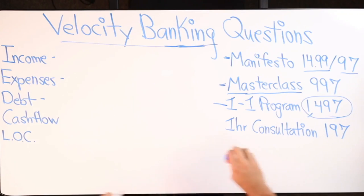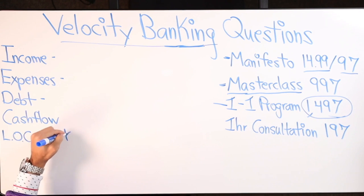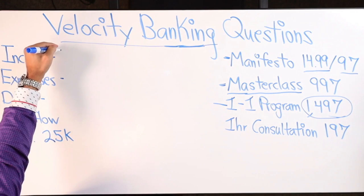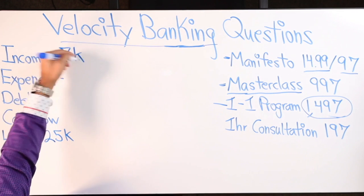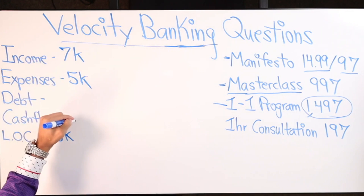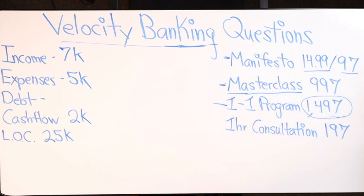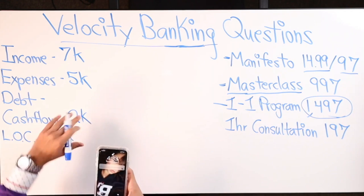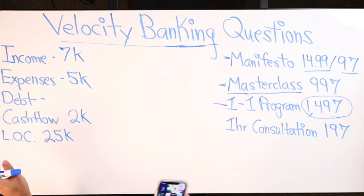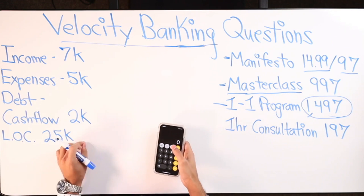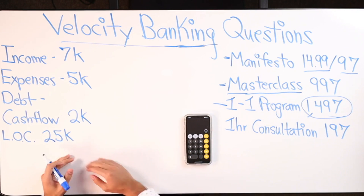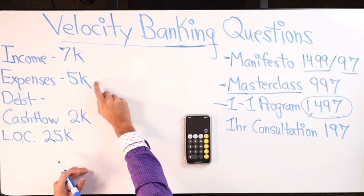Until the cash flow has completely wiped out the line of credit itself. So let's put this into perspective. Say for example you have a $25,000 personal line of credit. Say you make 7k a month, you spend 5k, you got 2k left over. Whatever debt you have is not the issue right now.